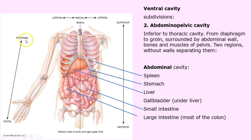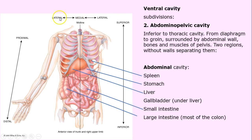Here are some key directional terms you'll see over and over: proximal means close to attachment; distal means far away; inferior means below; superior means above; medial means midline. These words are going to appear repeatedly throughout your studies.